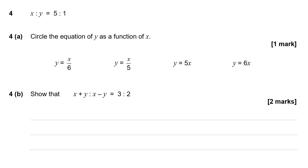Question 4. We're told that the ratio of x to y is 5 to 1, then we're asked to circle the equation of y as a function of x, with a few different choices. If the ratio of x to y is 5 to 1, then when x is equal to 5, y must be equal to 1. Let's put those numbers into the equations and see if they work. If y is equal to x over 5, then that is equal to 5 over 5 — and 5 over 5 is 1. So that one does seem to be true.